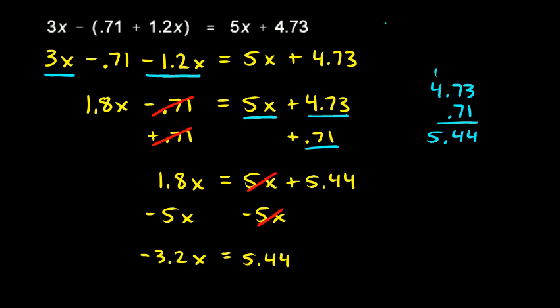Now look what's happened. I started with this equation up here and I've done all this work, and I have this little equation which is a whole lot simpler than my original equation, but it's mathematically equivalent to the original equation. I just need to solve for x now. And right now x is multiplied by negative 3.2, so I just need to divide by negative 3.2.